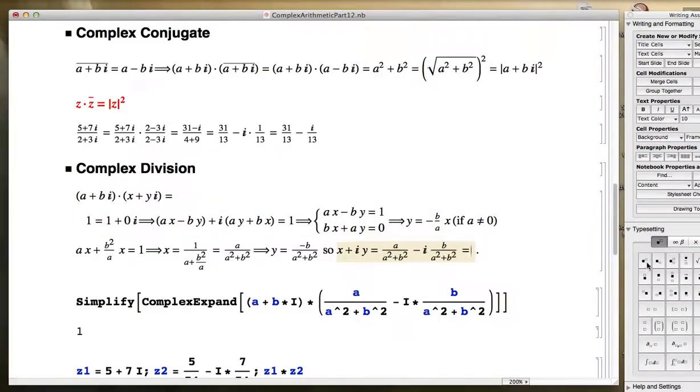Notice that this can be thought of as a - ib over a² + b². In other words, the conjugate of the original number divided by the square of the modulus. Alright, so that's another way to write the reciprocal of a complex number. What this equals then is it equals z to the -1 power, or if you prefer, 1 over z. Let me highlight that one.